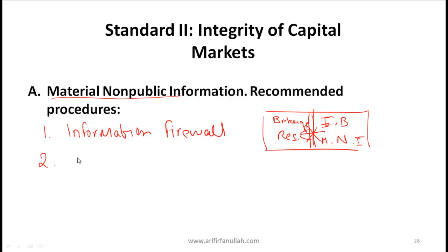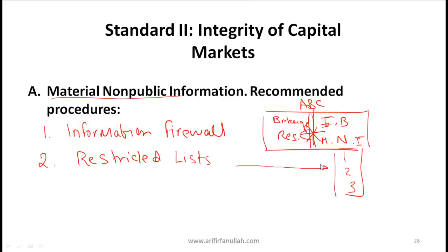Another procedure is to use restricted lists. If your brokerage recognizes that it has non-public information related to company one, company two, and company three, those companies are placed on a restricted list. This means research reports will only list facts and will not make recommendations. Additionally, the organization will not make any proprietary trades — meaning it will not buy or sell shares of those companies for its own account. If a customer independently wants to buy shares in one of those companies, that is acceptable, but proprietary trading would not be.